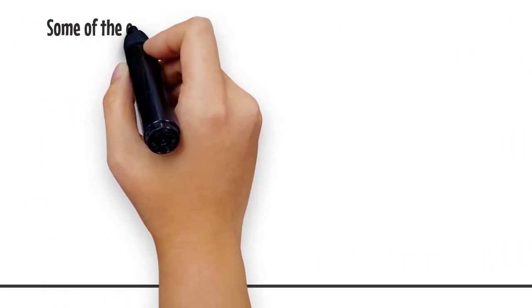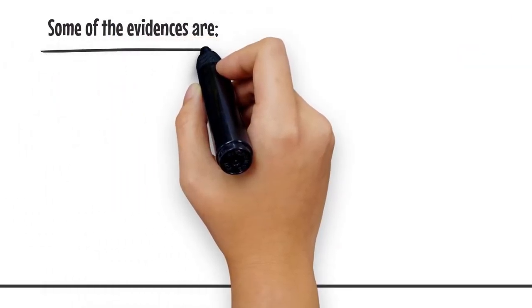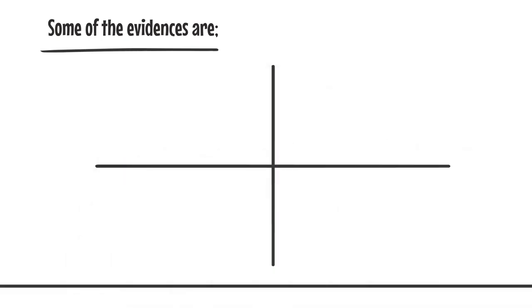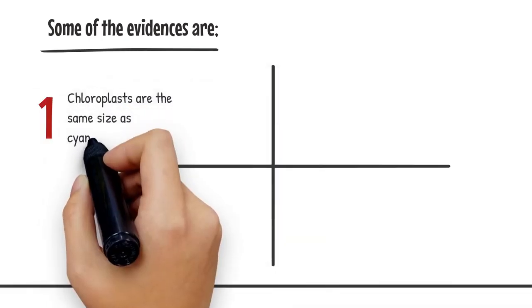Some of the evidence we currently have for this theory are... Chloroplasts are the same size as cyanobacteria cells.